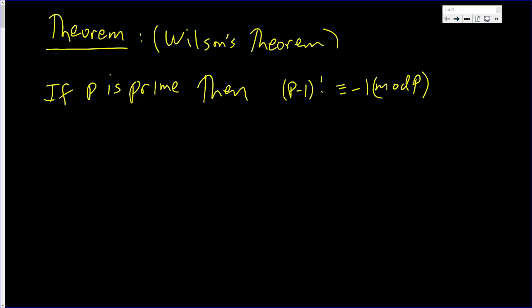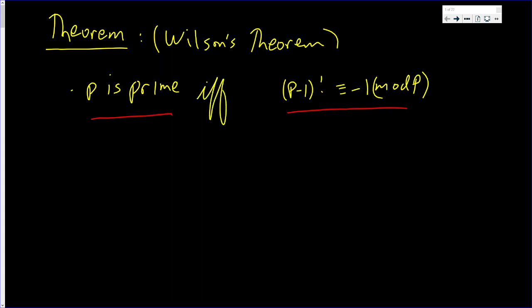In this video, we're going to prove a little bit more than Wilson's Theorem. Wilson's Theorem states that if p is prime, then p minus 1 factorial is congruent to negative 1. We're going to prove something a little bit bigger — if p is prime, then this holds, but we're going to show it the other way as well. This is if and only if: if this is true, then p is prime; and if p is prime, then p minus 1 factorial is congruent to negative 1 mod p.